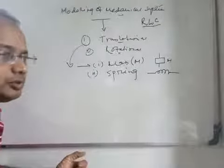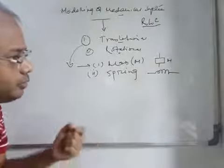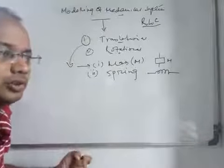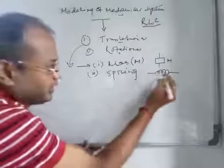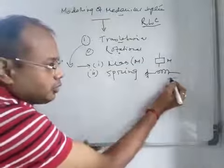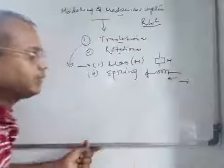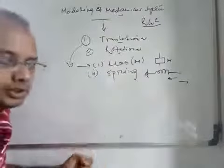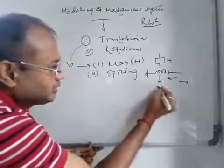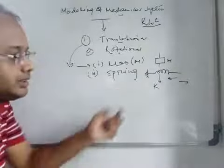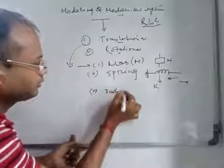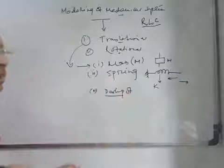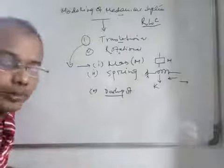Spring means basically this is one kind of storage element which gives some restoring force when the force is applied or withdrawn. When a spring is connected with some rigid body and you apply a force on one side — maybe you want to compress it, maybe you want to expand it — the spring will try to oppose the motion. This is denoted by a constant, the spring constant, that is k.